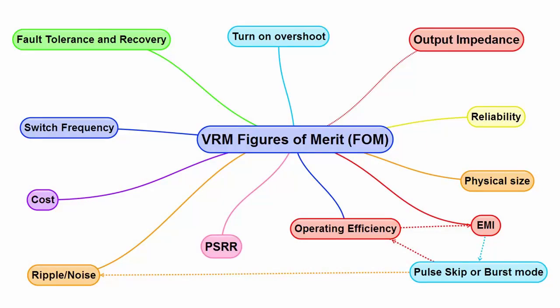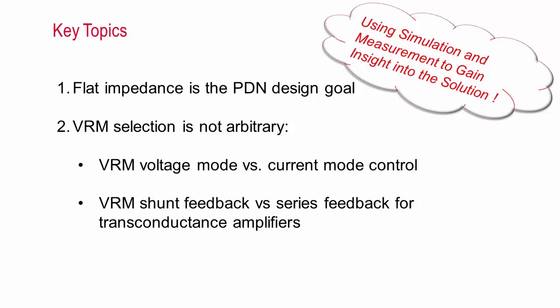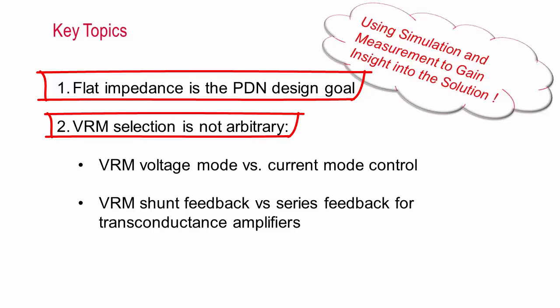There are many figures of merit for VRMs. In this video I'll focus primarily on output impedance with a little bit of discussion about power supply rejection ratio, or PSRR, since these really highlight the selection and optimization choices. The two key points highlighted in this video are why flat impedance is the PDN design goal and that the selection of the VRM isn't arbitrary.